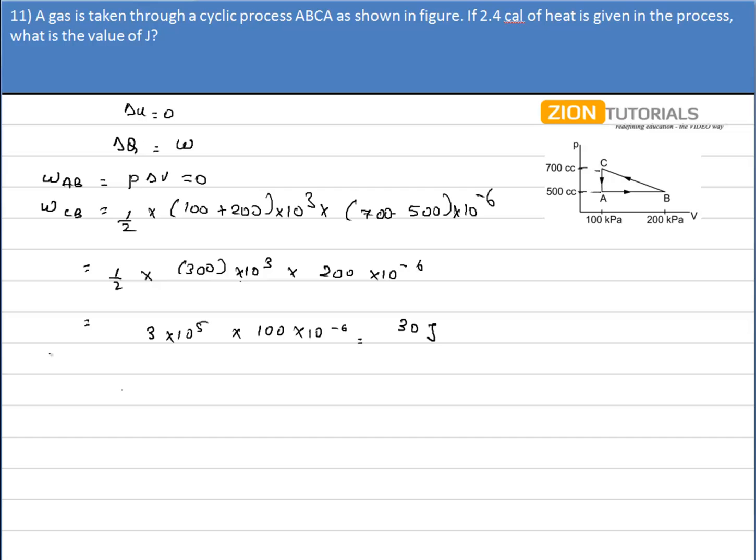Now, work done during the cycle AC is again given by P delta V. One thing we missed is that this work will be negative because clearly it is going in anti-clockwise sense. So work done during AC is given by P delta V. Pressure is 100 kilopascals, that is 10 to the power 3, into change in volume which is also negative. So it will be minus 200 into 10 to the power minus 6. It comes out to be minus 20 joules.